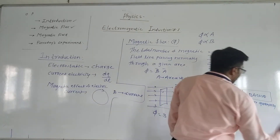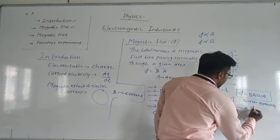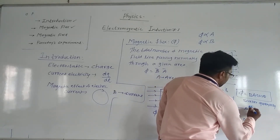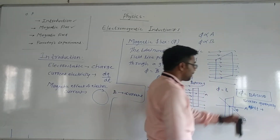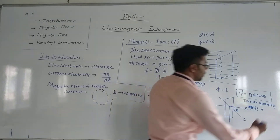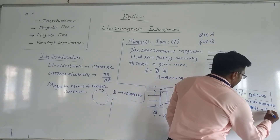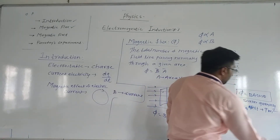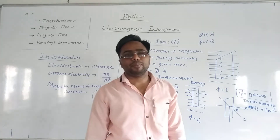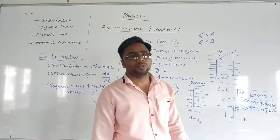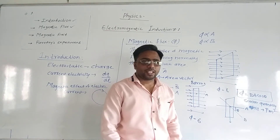It takes units to give us the unit of phi. The unit is Tesla times meters squared. Tesla meters squared is the unit of magnetic flux.